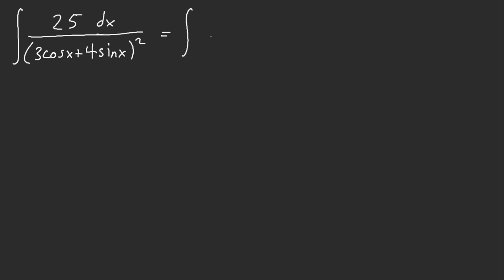So we're going to go ahead and do that, 25 secant square of x. This is going to give us 3 plus 4 tan x squared.